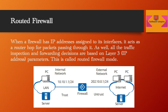When a firewall has IP addresses assigned to its interfaces, it acts as a router hop for packets passing through it, and all traffic inspection and forwarding decisions are based on Layer 3 parameters. This is called Routed Firewall mode.